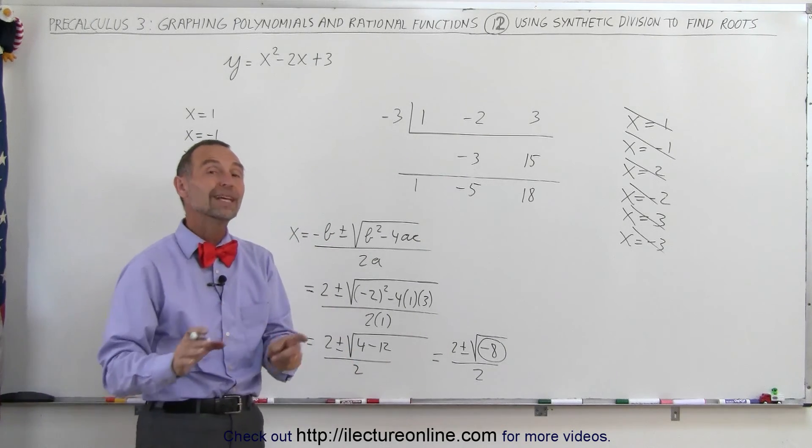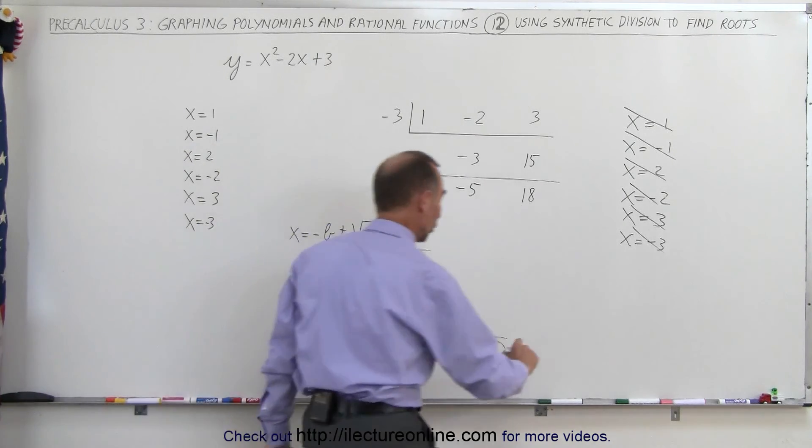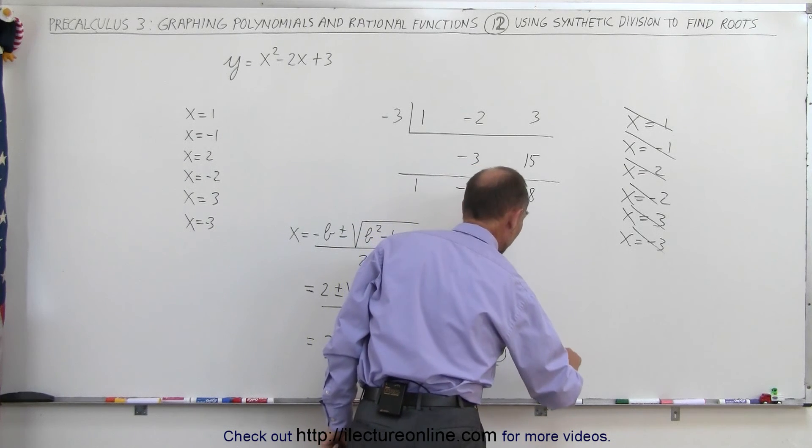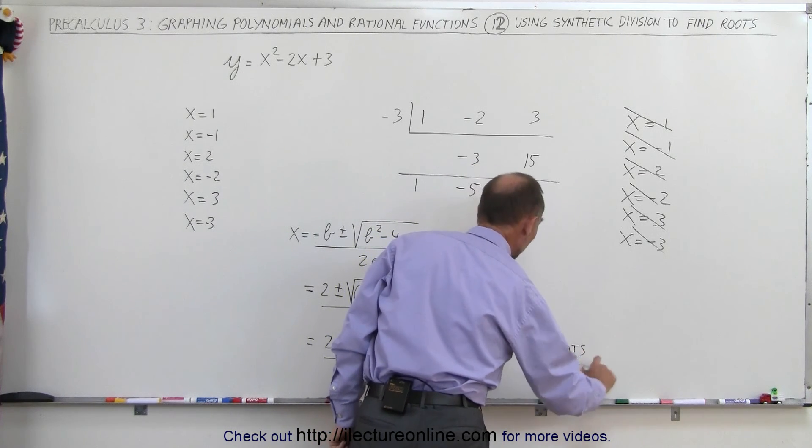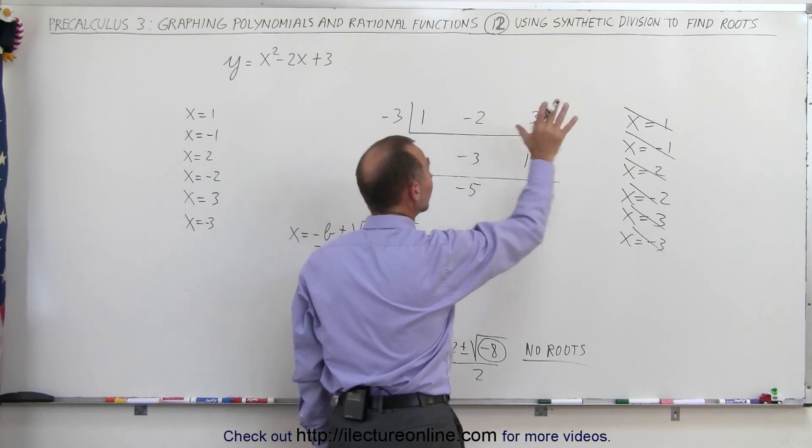A negative number in the determinant means we do not have roots, so no roots. And it means that our methodology using the synthetic division seemed to work.